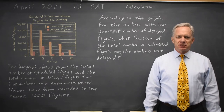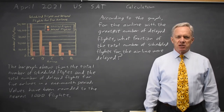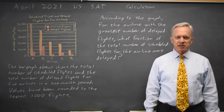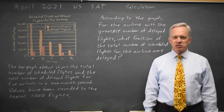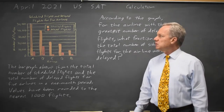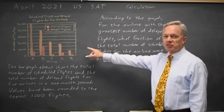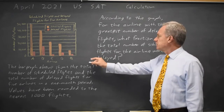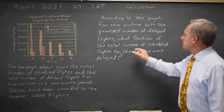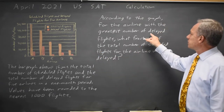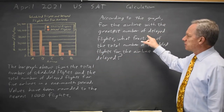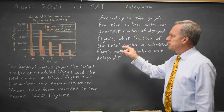I'm Dr. Roger and this question is from the April 2021 USAT calculator section. The College Board is asking us to interpret a bar graph on scheduled flights and delayed flights, and they ask about the airline with the greatest number of delayed flights.